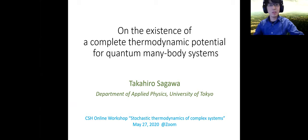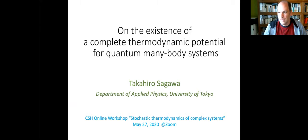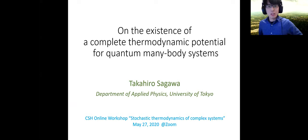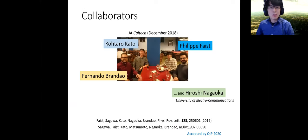Thank you for your introduction, Massimiliano, and thank you for inviting me to this workshop, organizers. Today I'm talking about a quantum information theoretic approach to thermodynamics of quantum many-body systems, called the resource theory of thermodynamics, which is slightly different from stochastic thermodynamics, but I'll make some connections. This work was done at Caltech in 2018, and my collaborators are Philip Faist, Fernando Brandão, Kotaro Kato, and Hiroshi Nagaoka. Our letter was published in PRA last year, and our long technical paper is still under review.